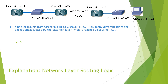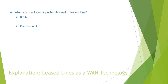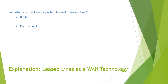Network layer routing logic. The question reads: what are the layer 2 protocols used in this slide? Options are HDLC, Ethernet, Point-to-Point, CDP, and LLDP. We know that the layer 2 protocols used in this slide are HDLC and Point-to-Point, so the answers are A and C. You can find the detailed explanation in the video. This slide covers WAN technologies.